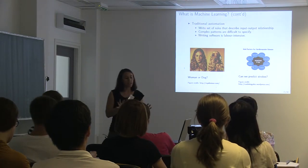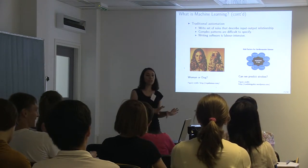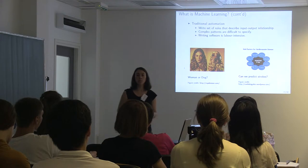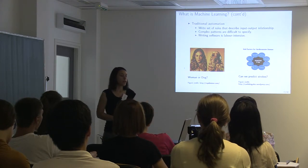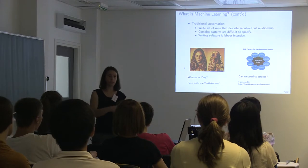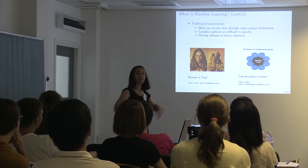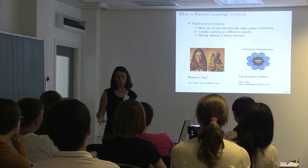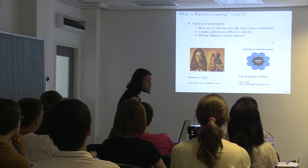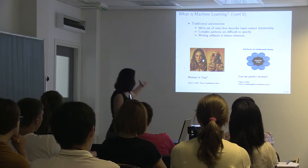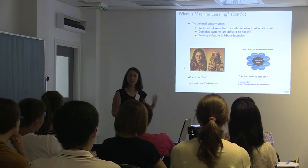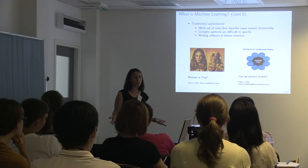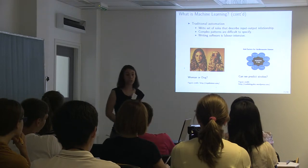In traditional automation, we make a set of rules: we break down a task into small tasks and say if this happens, then do that. We write rules that describe the pattern and use them to perform computations. But complex patterns are difficult to specify — for example, distinguishing a woman from a dog. Maybe we can say something about the nose being black, but another dog might have a pink nose.